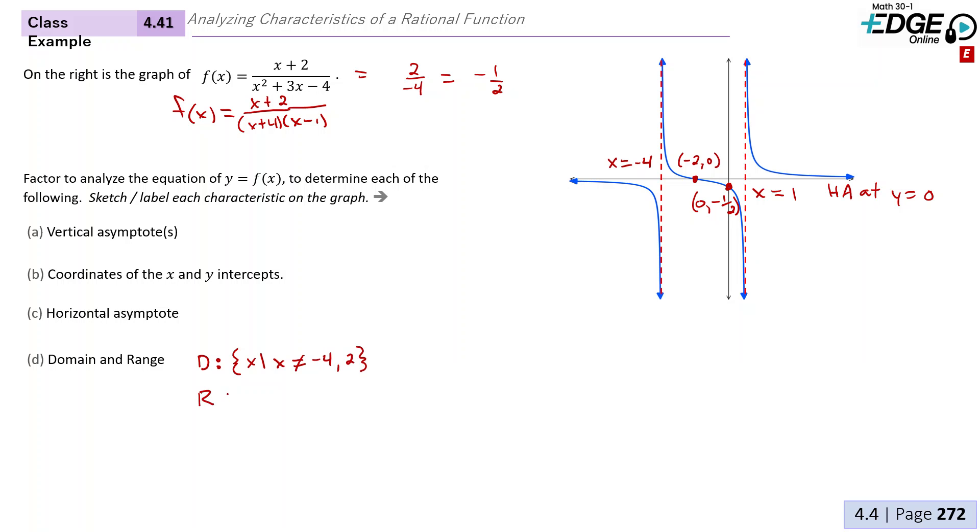And the range. You might think that we're going to exclude the horizontal asymptote of y = 0. But the fact that it crosses our horizontal asymptote means that we do actually have a point where y = 0. So in this case, we're just going to say y such that y is a member of the real numbers.